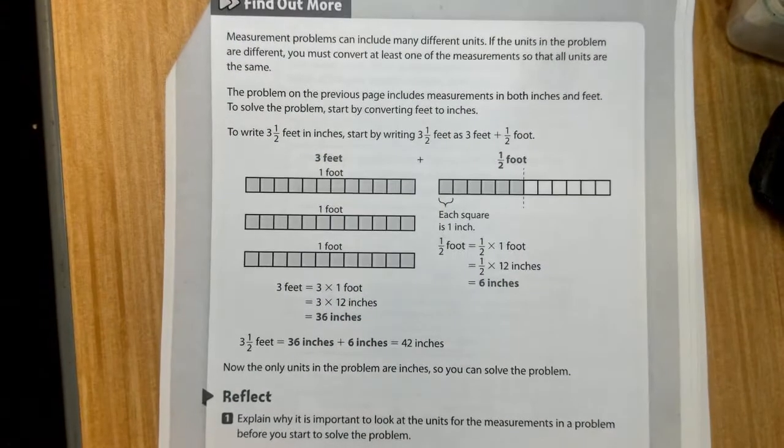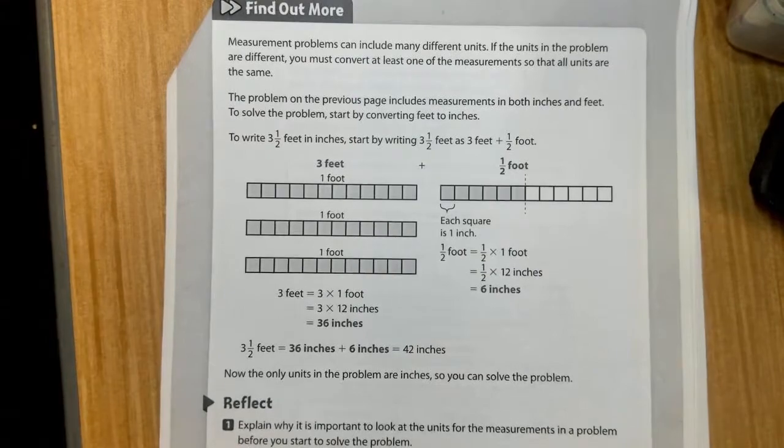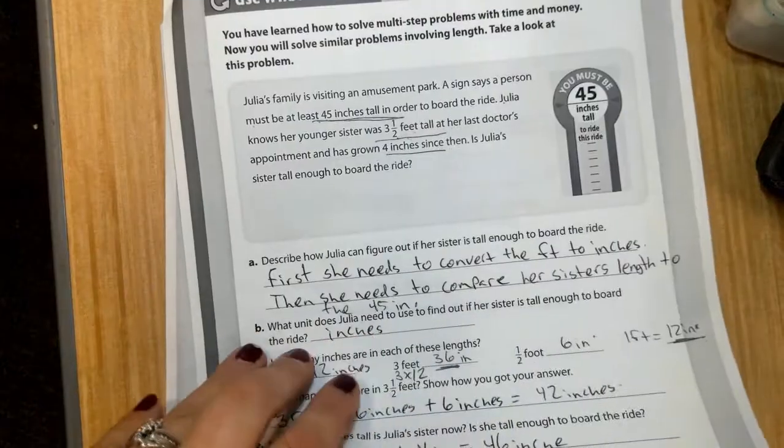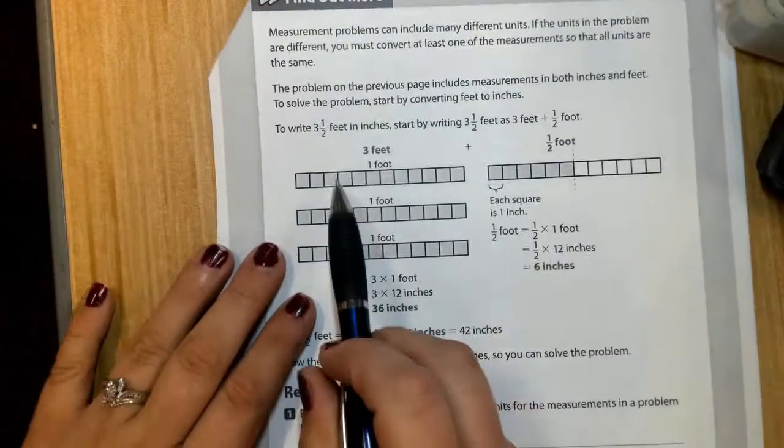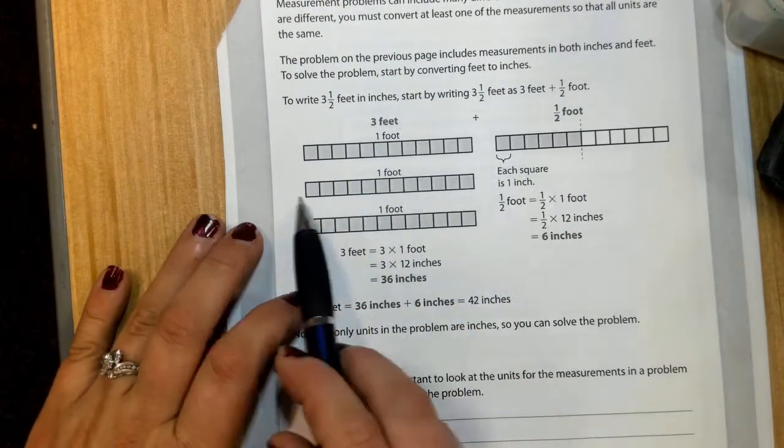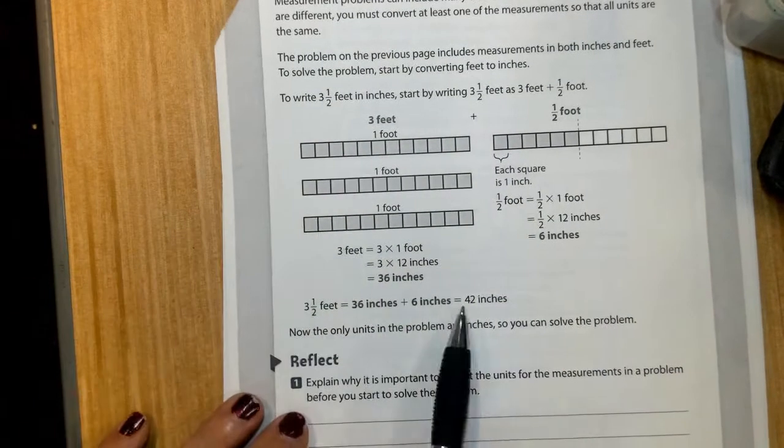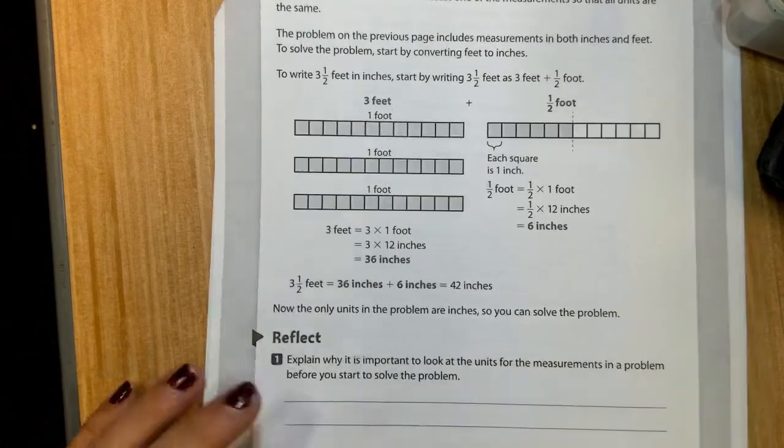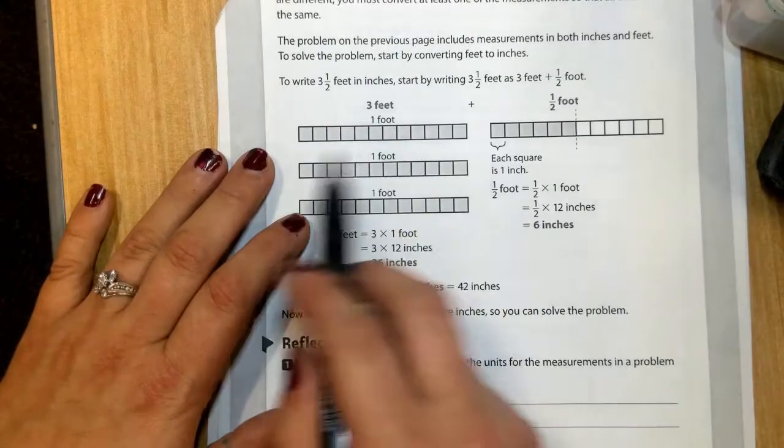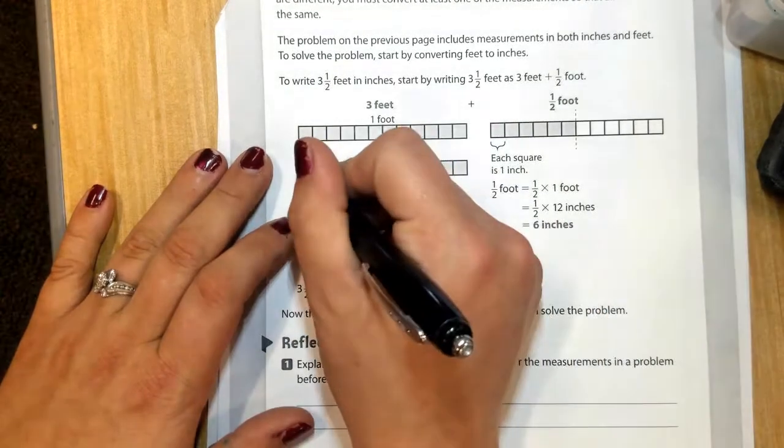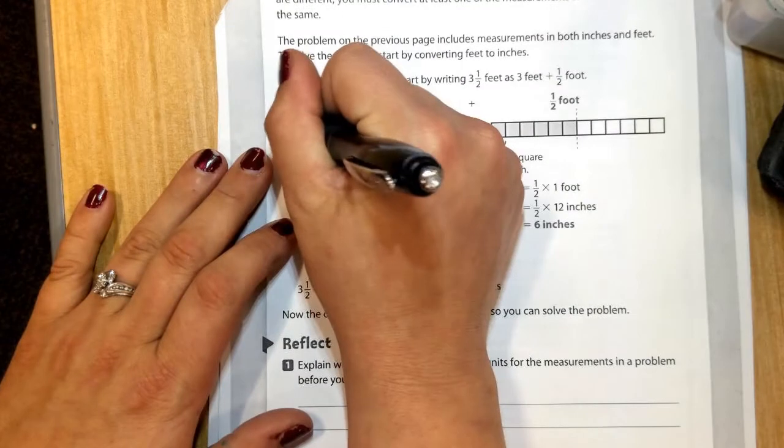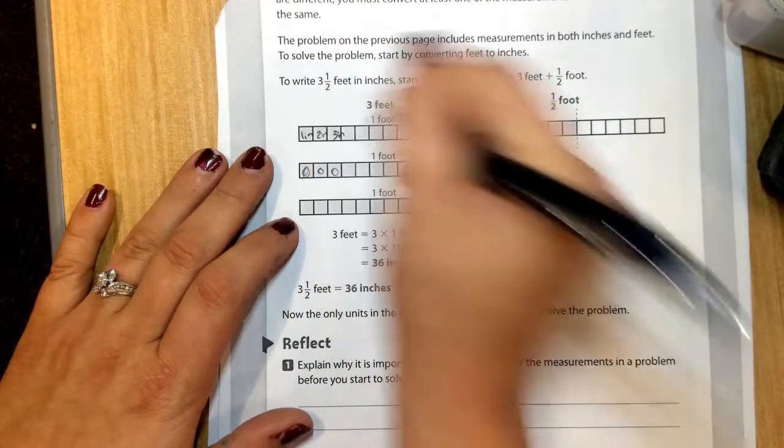Now on the next page, page 271, it kind of breaks it down using bar models. If you are a visual person and you want to see those models, you see that they broke it down. Each of these bars is one foot. So we have three feet. And then they took the half, they added it, and then that's how they came out with the 42 inches. Each of these bars has 12 inches in it because each of these squares is the same as 1 inch, 2 inch, 3 inch, so on.